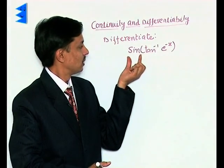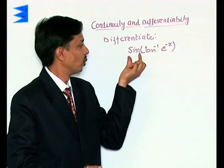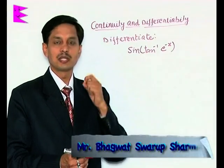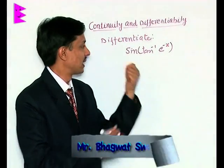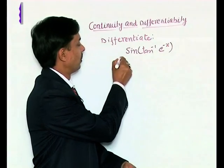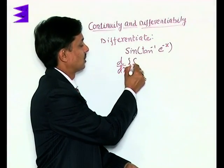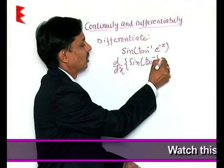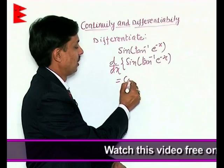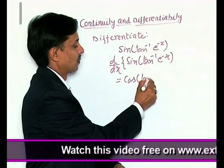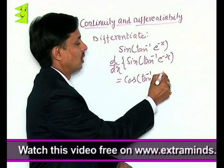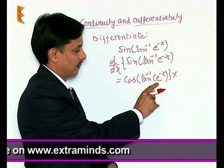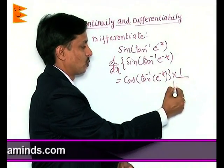To differentiate this with the help of chain rule, the very first thing is the function is of sin. The derivative of sin x is cos x. That is why the derivative of this question, that is sin of tan inverse of e to the power minus x, will be given by cos of tan inverse of e to the power minus x. Then tan inverse x differentiation is 1 upon 1 plus x square.